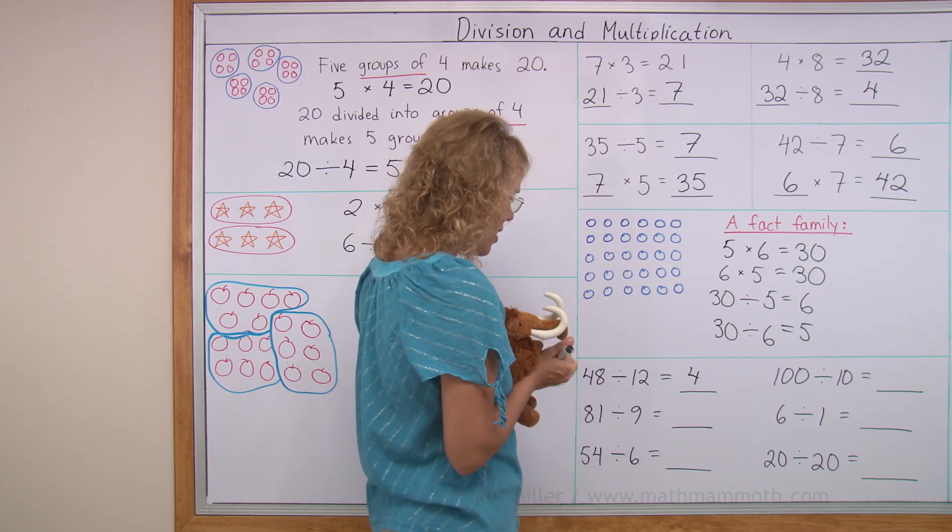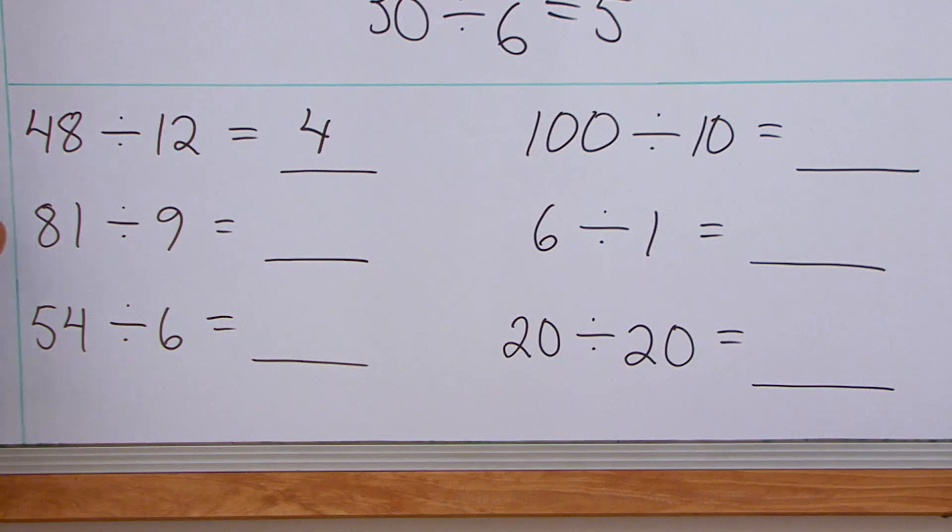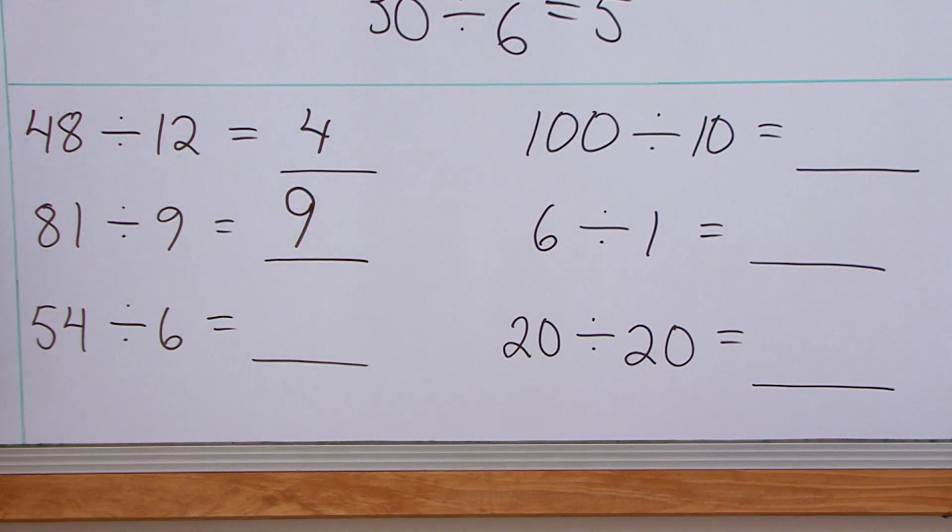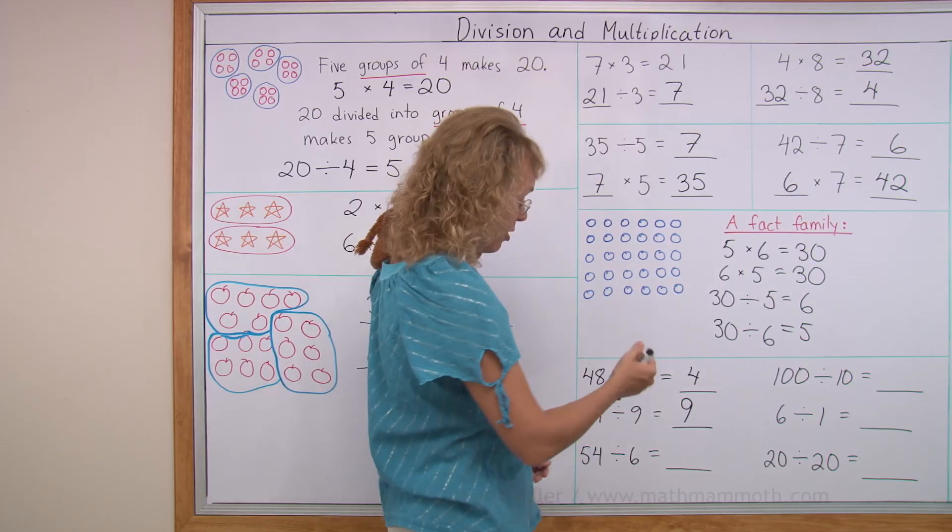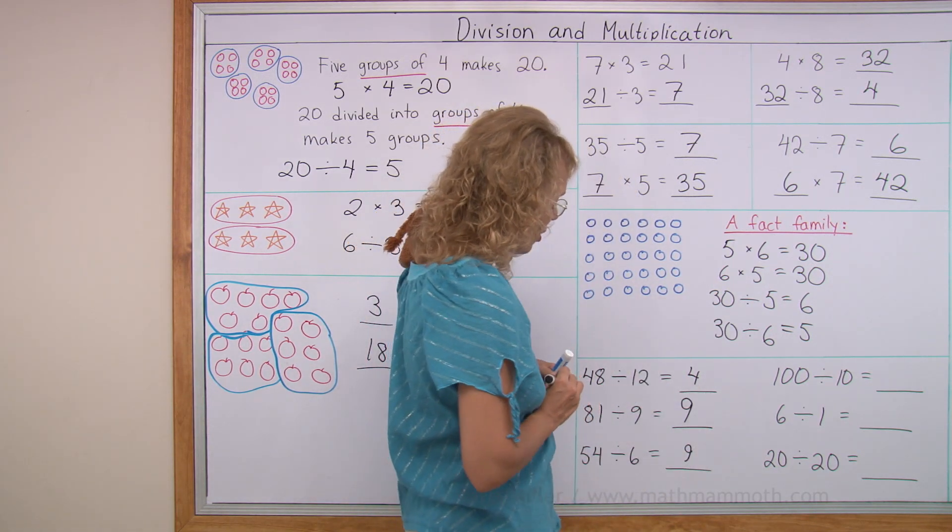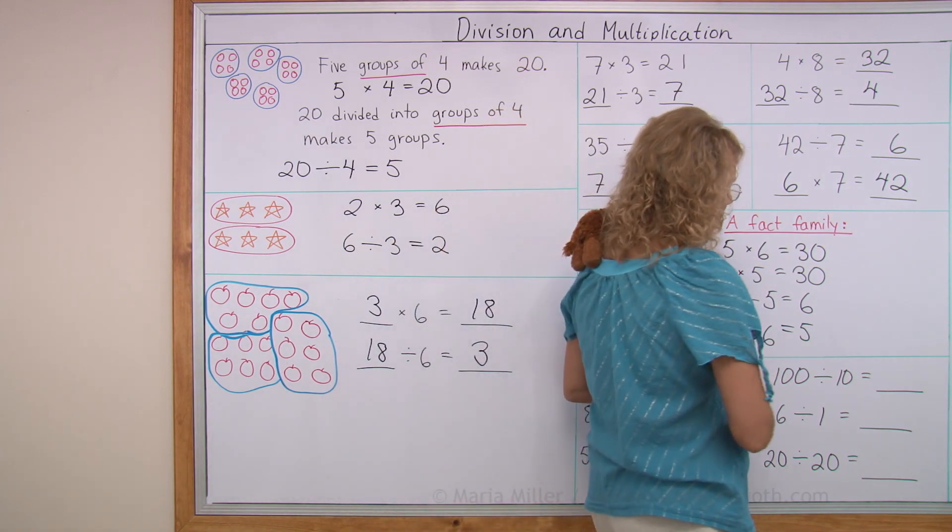Matthew wants to do the next one. Sure. How many nines are in 81? How many times 9 makes 81? Nine times 9, 81. And how many times 6 makes 54? You can even guess and check, but you should know your multiplication tables. Nine times 6 equals 54.